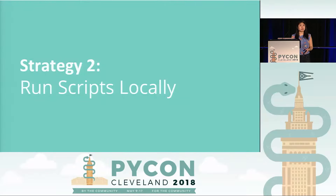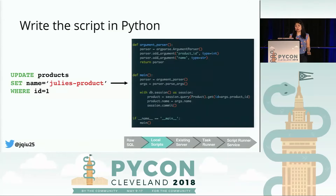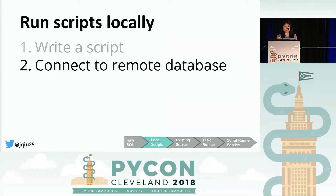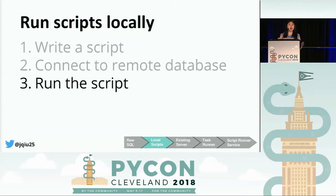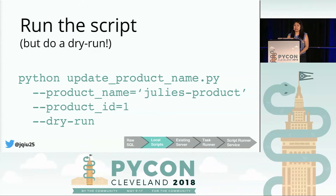Our next strategy is to write scripts and run them locally on our machines. To run scripts locally, we first write the script — converting SQL logic to code in your programming language of choice, mine being Python — and add an argument parser to make scripts reusable. Next, we form a connection to the production database using a VPN or SSH gateway. Lastly, we run the script from our terminal. I often like to add a dry run flag so I can preview results before committing changes to production.